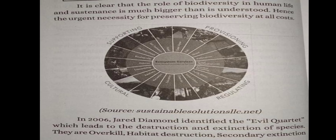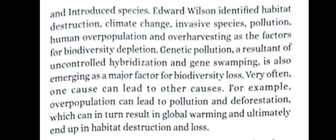The threats to biodiversity are described by the evil quartet framework. The first is Overkill, followed by Habitat Destruction, Secondary Extinction, and Introduced Species. These are all interconnected and interdependent — the destruction of one leads to another. Edward Wilson identified habitat destruction, climate change, invasive species, pollution, human overpopulation, and overharvesting as factors for biodiversity depletion.